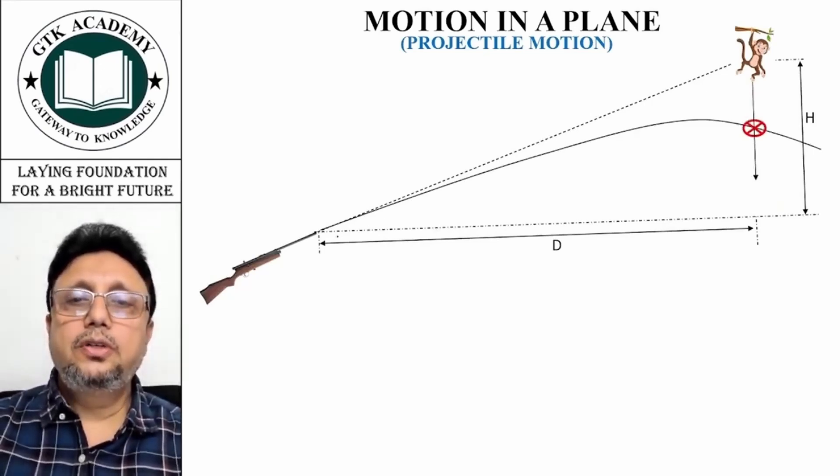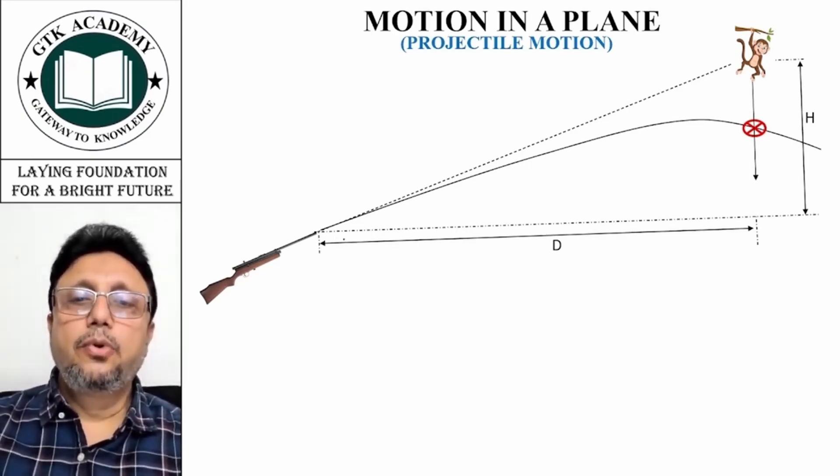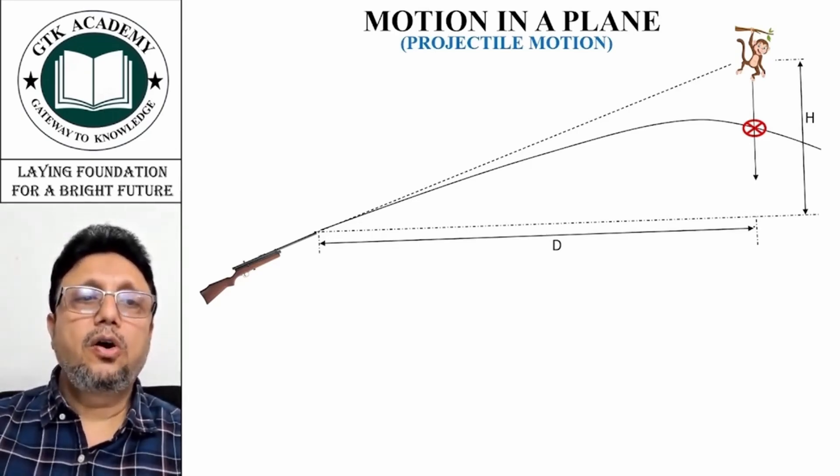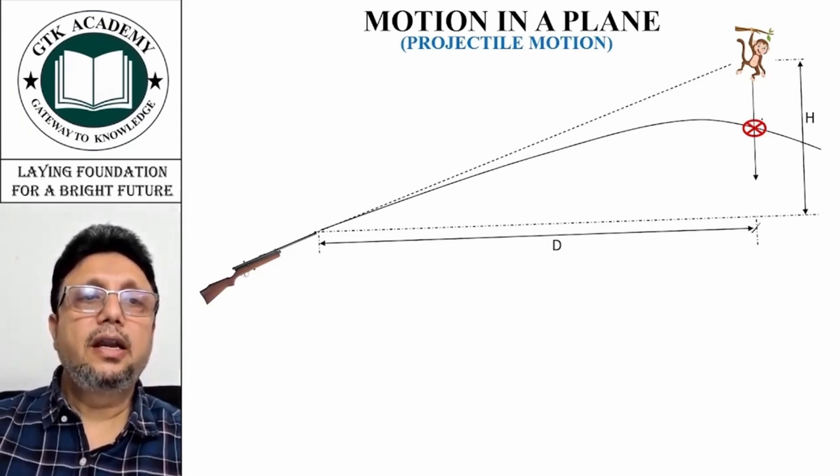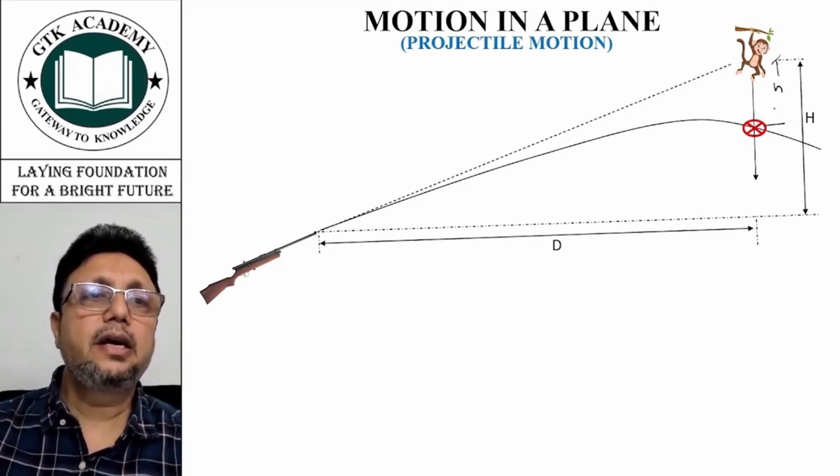What is the condition if the monkey will get hit? The bullet will cover a horizontal distance of d and reach this place. When it reaches this place, the monkey and bullet have to be at the same place. Suppose the monkey falls by a height h and the position of the bullet is h dash, the vertical distance.